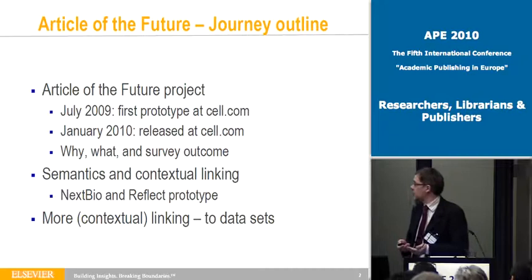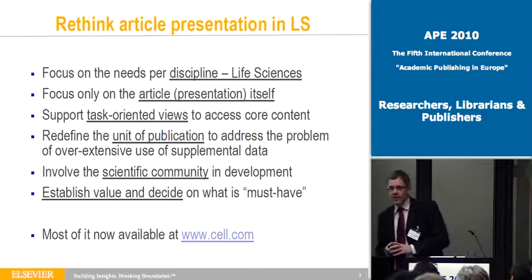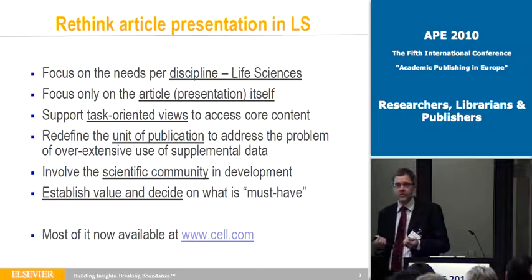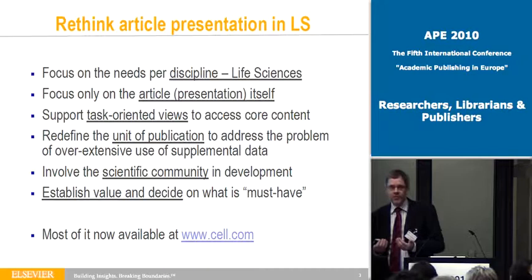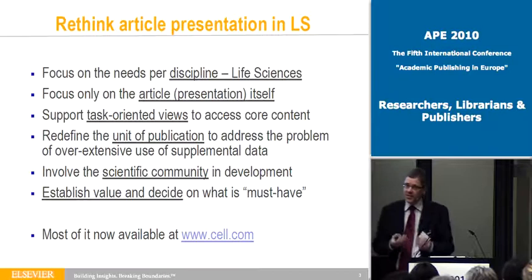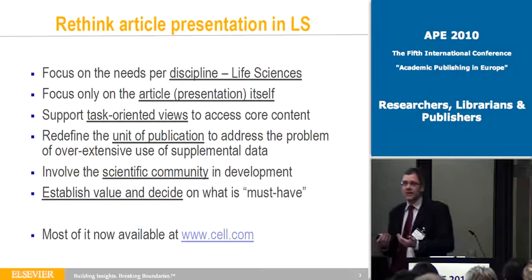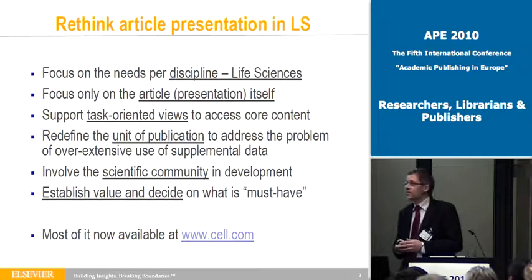We feel that over the last centuries, publishing became a little bit one-size-fits-all — directed through paper, and then afterwards the PDF. But now with the web in place, we have to be more domain-specific. Publishing mathematics is different than publishing chemistry, is different than publishing psychology. We really have to find ways to express the differences in the domains in the presentation of the article. And that's what we did first with Life Sciences.